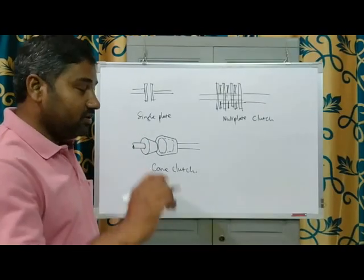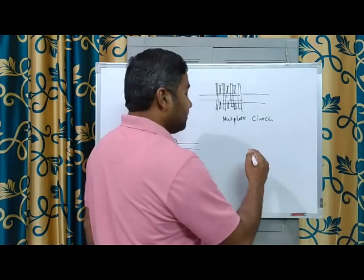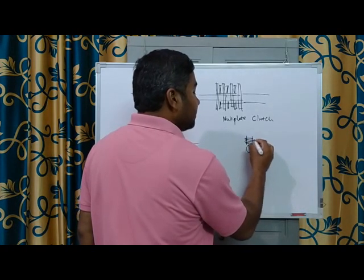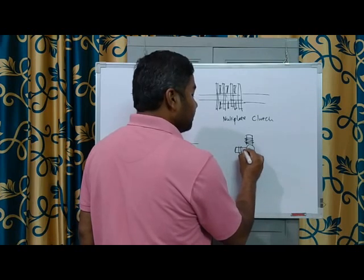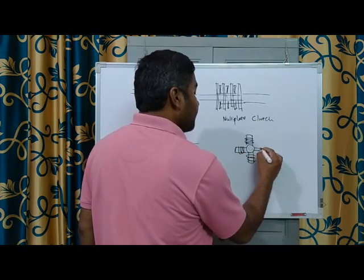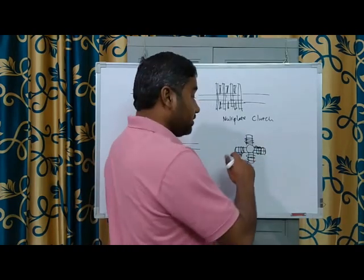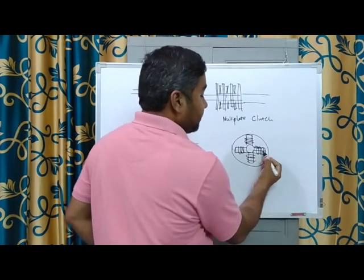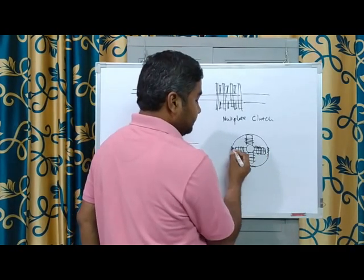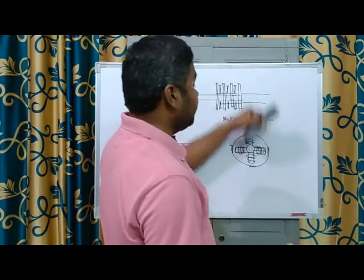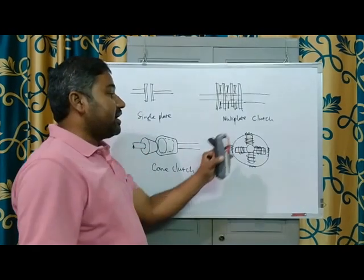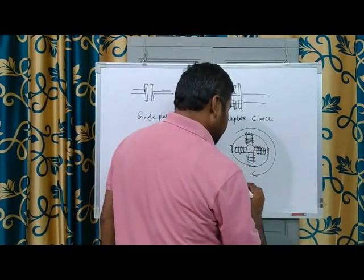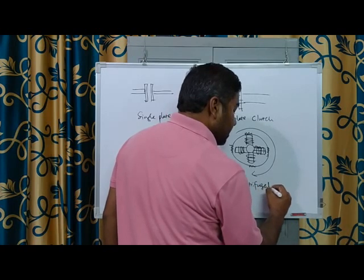There is one more type. Drawing the side view — this is a shaft, on the shaft we have spring-loaded elements. They rotate inside a cylinder. When this rotates, because of centrifugal action, these elements go and press against the inner surfaces of the cylinder. Higher is the RPM, higher is the movement of these elements, and higher is the frictional force at these points. Because of that, the outer cylinder also rotates. This one is known as a centrifugal clutch.